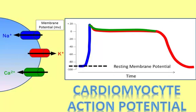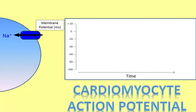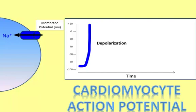When the cell is stimulated by the electrical activity of pacemaker cells, the first channels to open are fast, voltage-gated sodium channels. These channels allow sodium ions to move from their area of high concentration outside the cell towards the region of low concentration inside the cell. Since sodium ions are cations with a positive charge, this causes the inside of the cell to become less negative. The tracing of the action potential shows an increase in positivity,